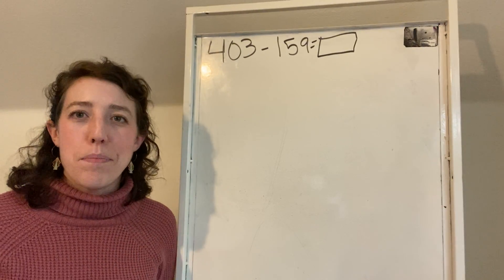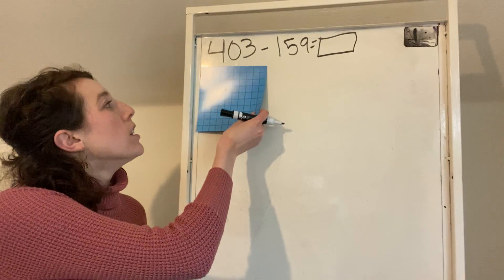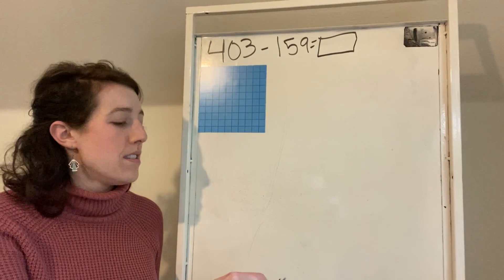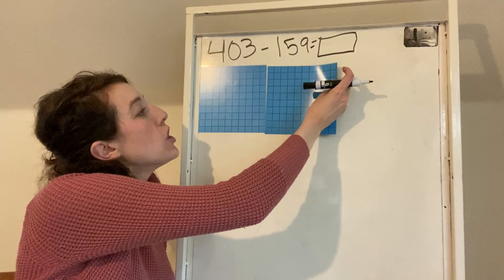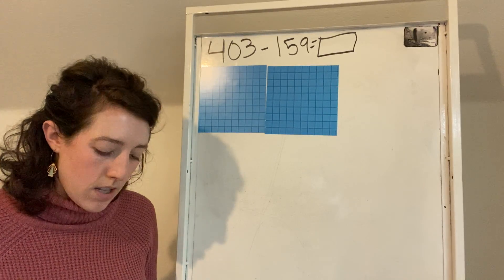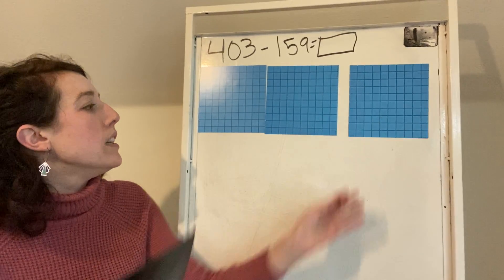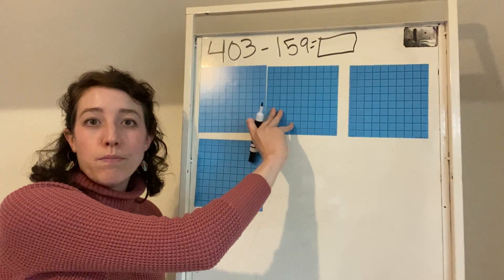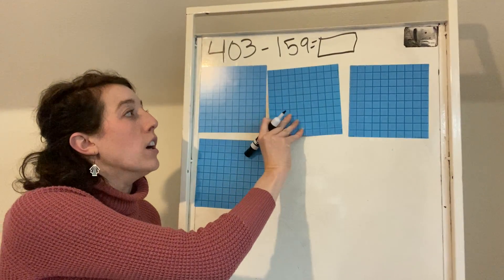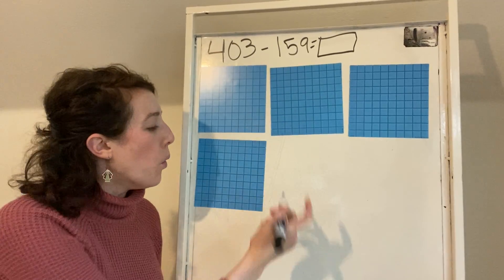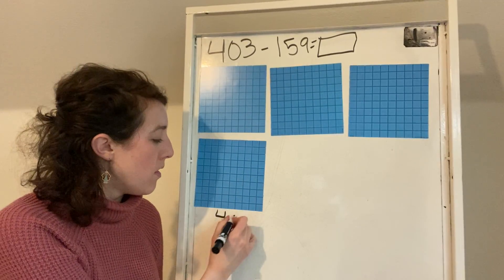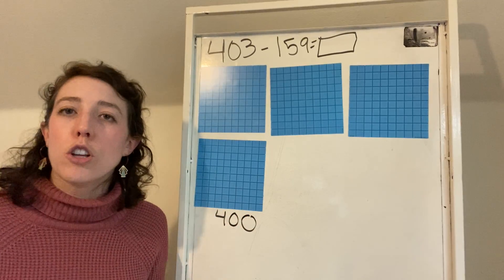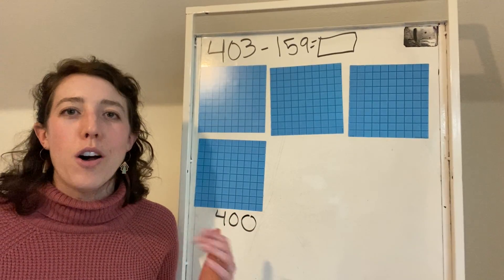So count with me as we build this number. 100, 200, 300, 400. And I can even write that label. You could write the number 100 beneath each of these, or you can just write 400 to show that you have 400 altogether.